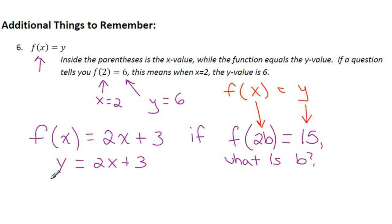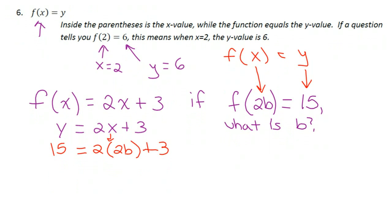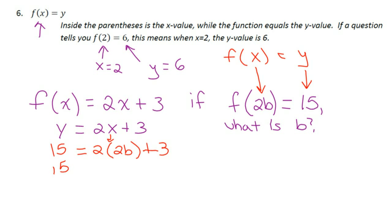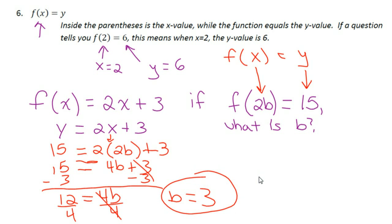So let's continue through this here. So 15 equals, now, 2 times 2B would be 4B. So this would be 4B plus 3. And then you finish this off by subtracting 3 from both sides. Subtract 3. So we get 12 is equal to 4B. And lastly, divide by 4. So 12 divided by 4, we get B would equal 3. And that would be the answer here. So inside is x, outside is y. And the other thing to remember here is that the word is means equal, and the word of means multiply.